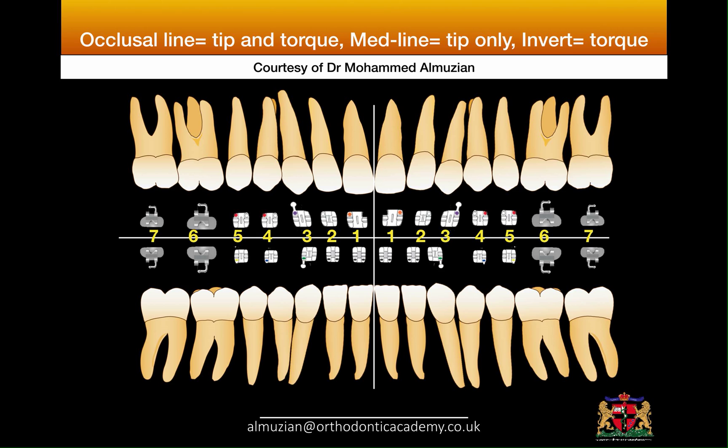There are many movements or variations in bracket positioning. One option is to take the bracket and cross the occlusal line — that is, take it from the lower and replace it on the upper. This is called crossing the occlusal line, and it will result in changing the tip and torque.